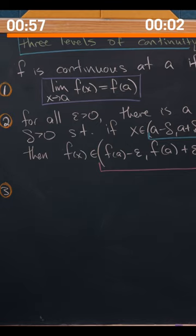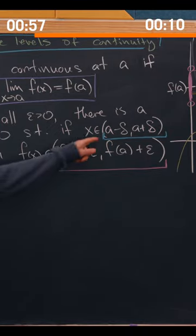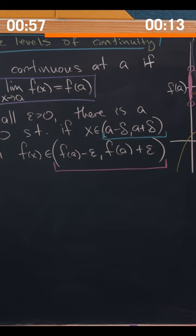Let's rewrite our definition of continuity using these ideas of neighborhoods. This magenta interval is really a neighborhood of f of a, and this blue interval is a neighborhood of b.